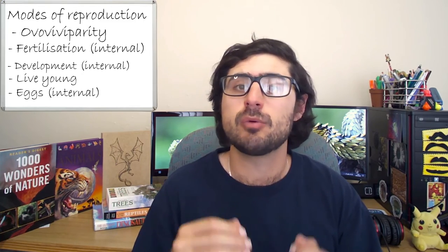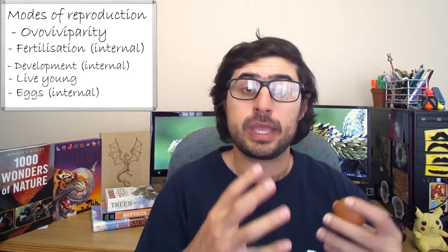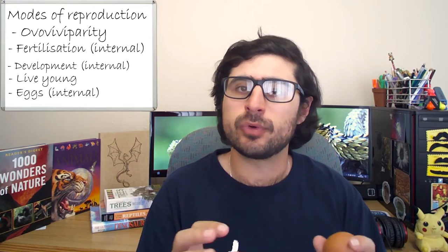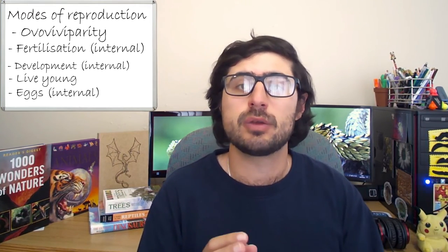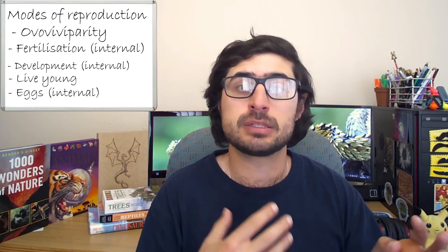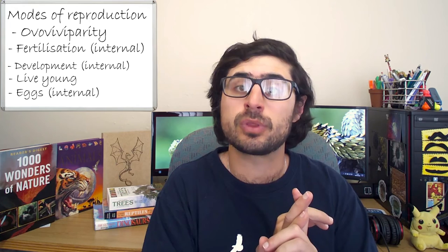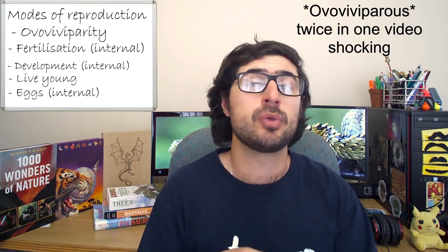They hang around for another couple of days within the mother, where they are then given birth to live. The eggs develop and hatch within the mother, and the young finish off the last of the yolk sac or receive nutrients from the mother in other ways, such as from non-fertilized eggs. Then, once those couple of days pass, they are given birth to live. So there is live birth, and there are eggs being formed with yolk sacs — ovoviviparous animals have traits from both worlds.